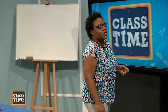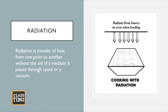Radiant heat doesn't need any medium to transfer heat to anything — it takes heat from the direct source. It's the transfer of heat from one point to another without the aid of a medium; it passes through space or a vacuum. Like the video said, the radiant waves — the microwaves — travel and make contact with the item being cooked.